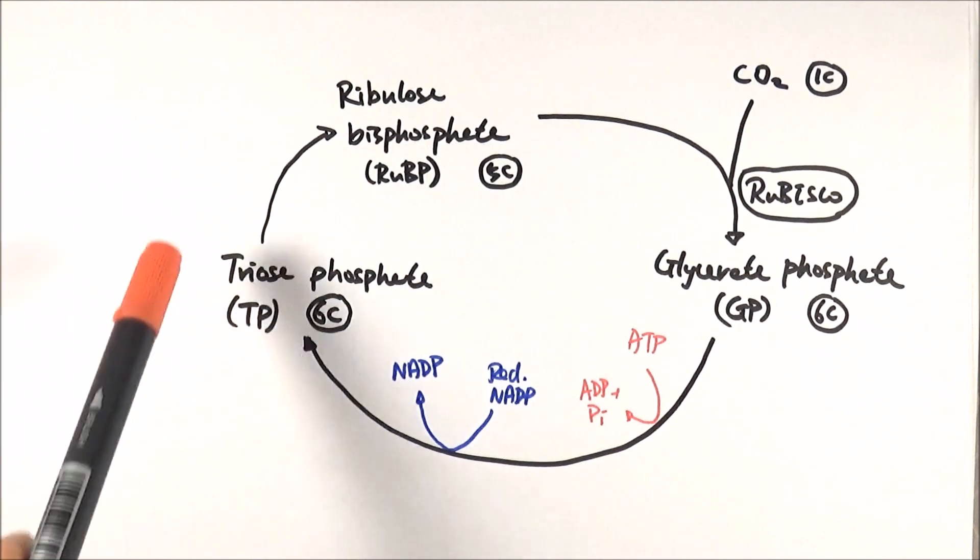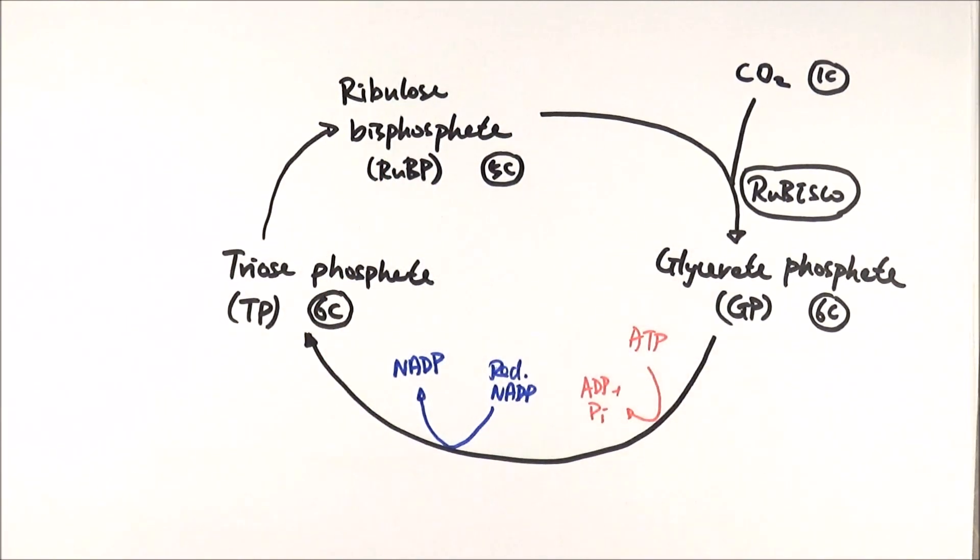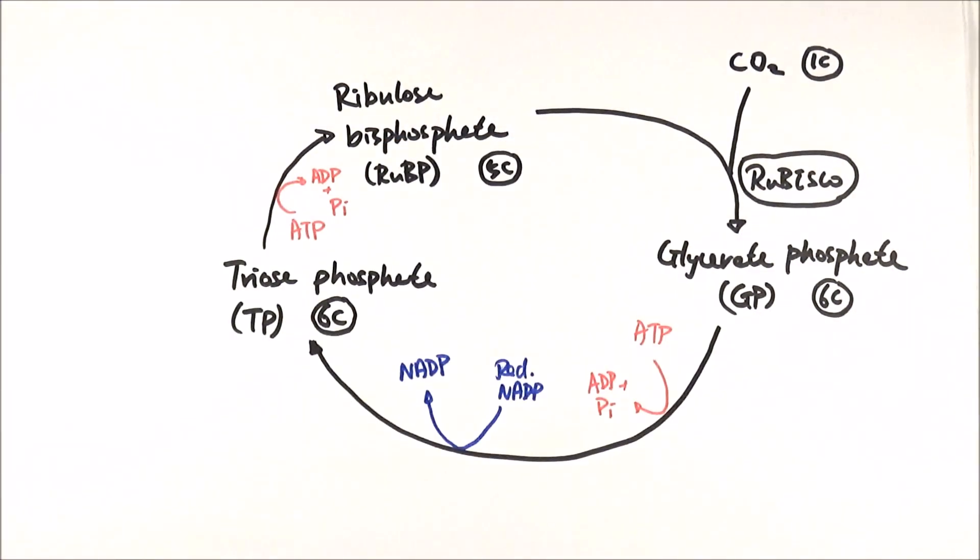And then finally, when triose-phosphate goes back to ribulose bisphosphate, ATP is also required to provide energy to change its molecular structure. And this bit is the Calvin cycle.